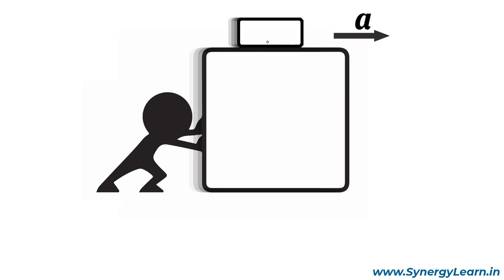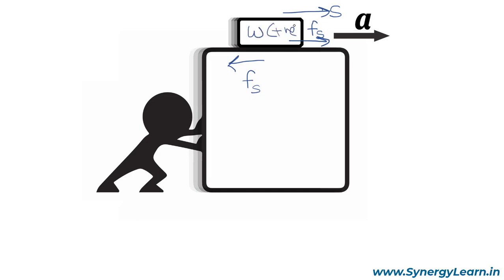Let us take another example. A block is placed on a bigger block and moves together with it. At the contact surface between the two, a friction force acts on the upper block in the forward direction, because it is friction that moves it forward. This friction is static because there is no sliding at the contact between the blocks. As a reaction, the upper block exerts a static friction on the lower block in the backward direction. An observer on the ground sees the upper block moving forward, that is, having displacement in the forward direction.